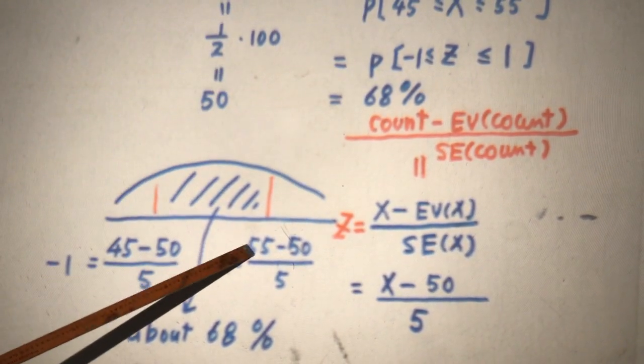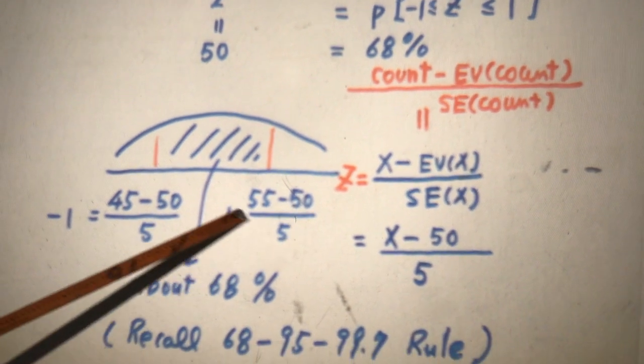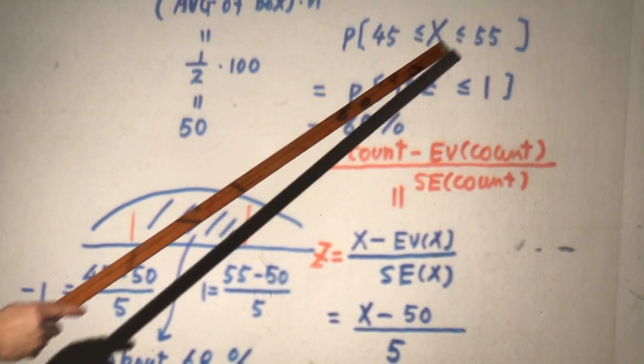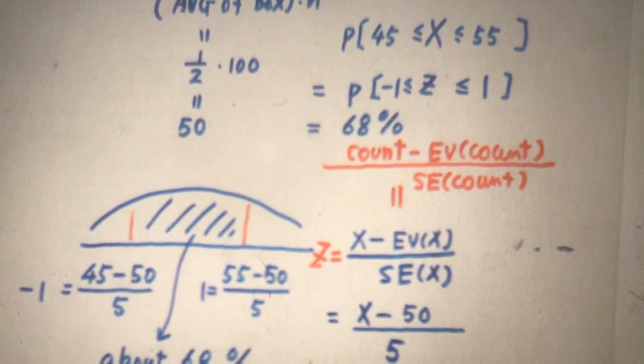And 55, you subtract by 50, divided by 5, it's 1. So X between 45 and 55 convert to z score between minus 1 and 1.